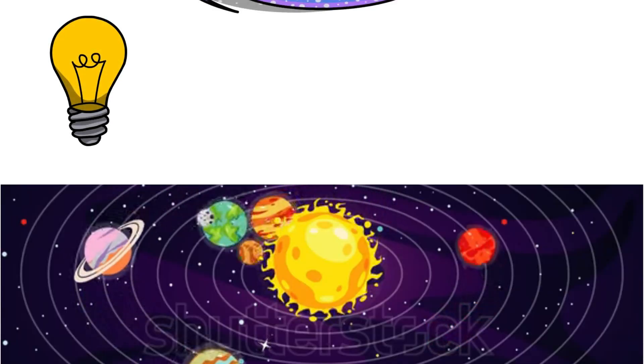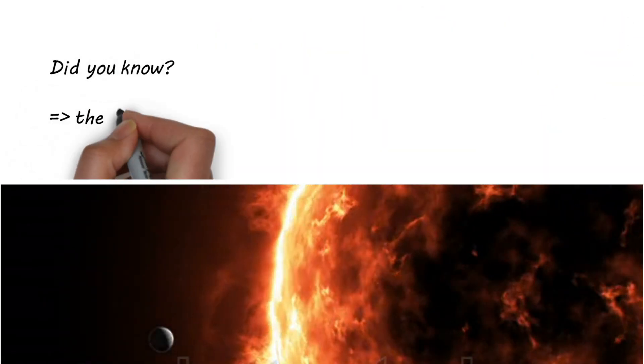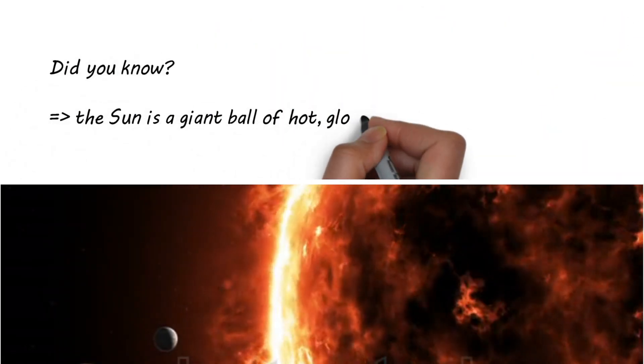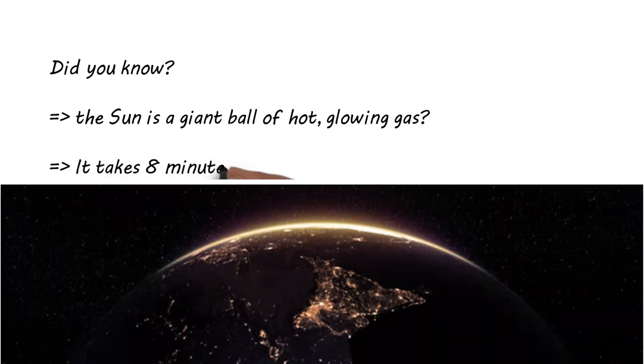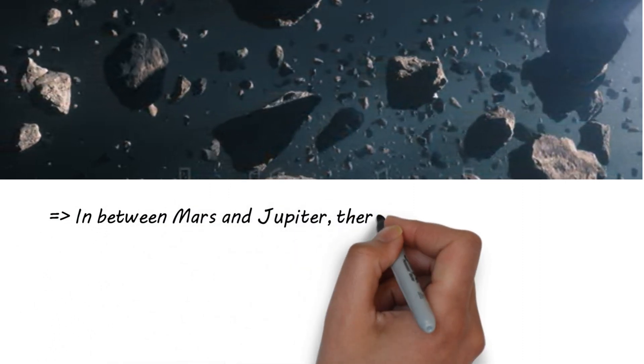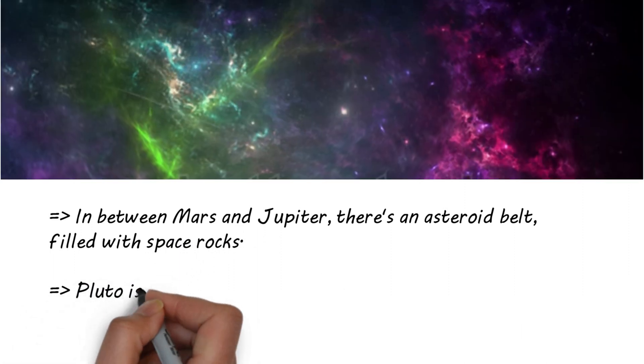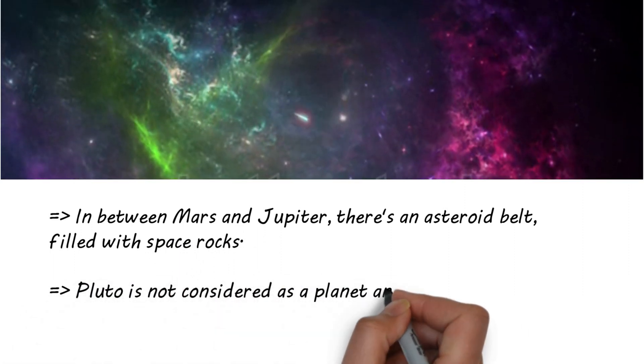Before we wrap up, here are some fun facts. Did you know the sun is a giant ball of hot glowing gas? It takes eight minutes for its light to reach us on Earth. In between Mars and Jupiter there's an asteroid belt filled with space rocks. Pluto is not considered a planet anymore since the year 2006.